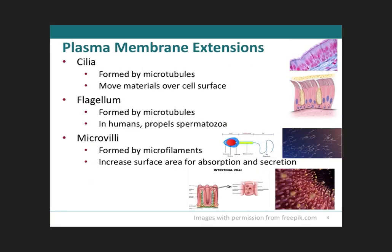It's very important to cover these plasma membrane extensions because cilia and microvilli are extensions of epithelial cells. Since this module covers epithelial cells, it's important to touch on these structures. Microtubules are formed by tubulin, microfilaments by actin filaments. The cilia and flagellum are formed by microtubules, and microvilli are formed by microfilaments.